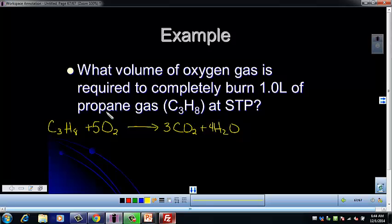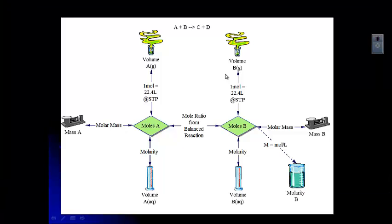Let's go back to the flow chart for just a minute. Looking at what we're going to do: we're going to go from our volume of propane to moles of propane using 1 mole equals 22.4 liters at STP. Then we're going to go from moles of propane to moles of oxygen using the mole ratio from the balanced reaction. Then we're going to go from moles of oxygen to volume of oxygen using our 1 mole equals 22.4 liters at STP.